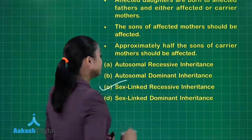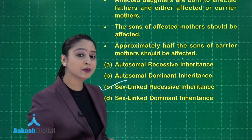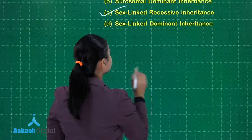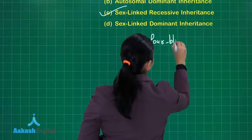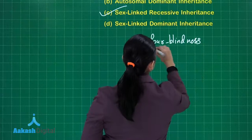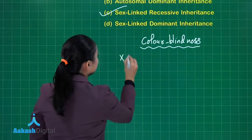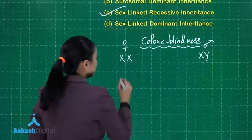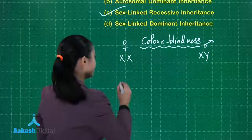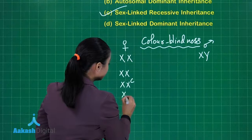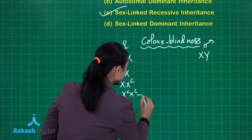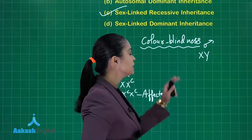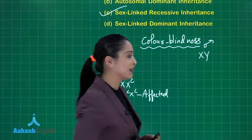These five characteristics are shown by sex-linked recessive inheritance. An example is colorblindness, which is X-linked recessive. Females have XX and males have XY chromosomes. A female will be affected only when both X chromosomes carry the faulty gene — a normal female, a carrier female, and an affected female. A male is affected even if just one X chromosome carries the faulty gene.